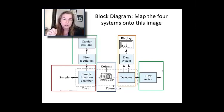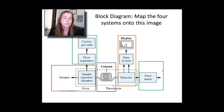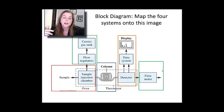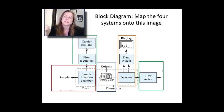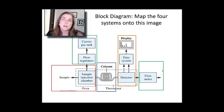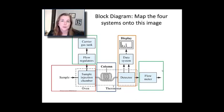As you do block diagrams, you should really think about all the different components. As I go through them one by one in the remaining mini lectures, one of the things I'm looking for is quantitative information. It's fine that you know the column sits in an oven, but how long is the column typically? What's its diameter? What are typical temperatures you operate at? Having those quantitative details overlaying your block diagram means you have a pretty good mental picture of what the instrument's all about. Thanks so much — see you next time.